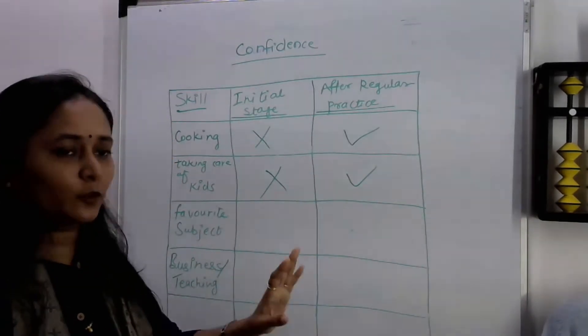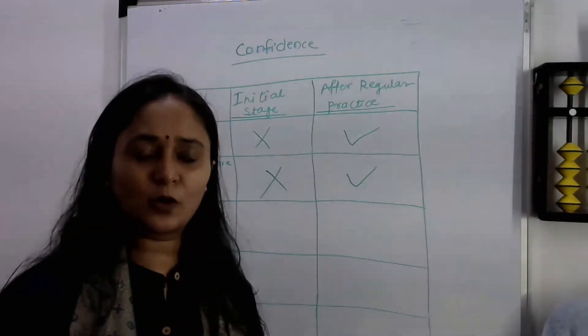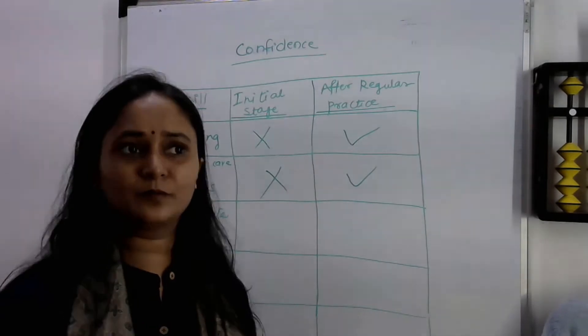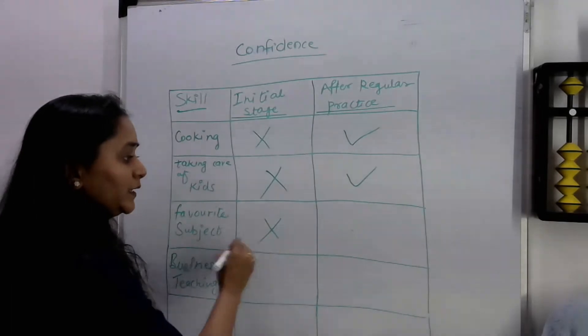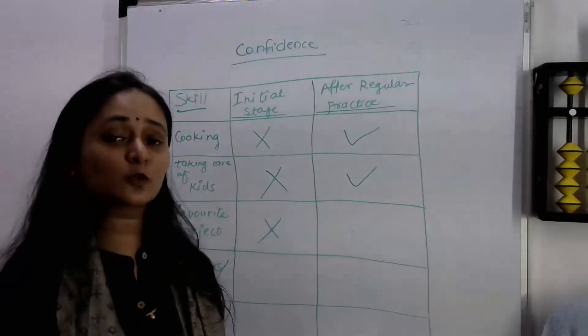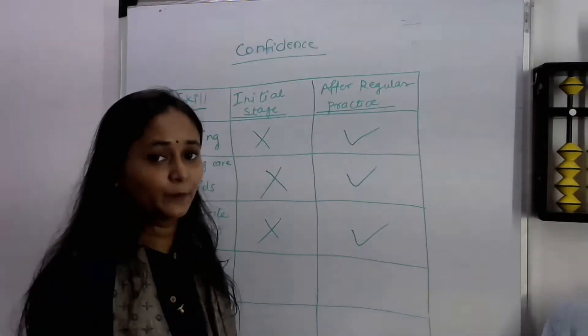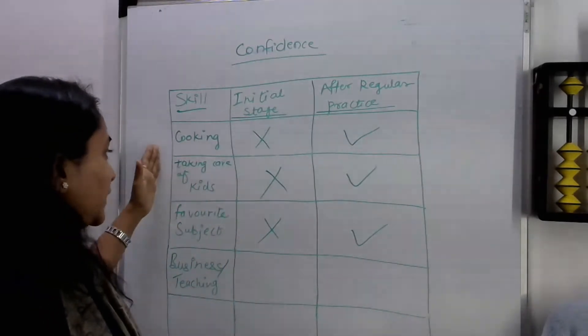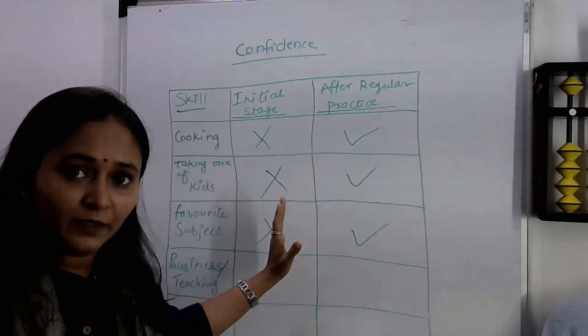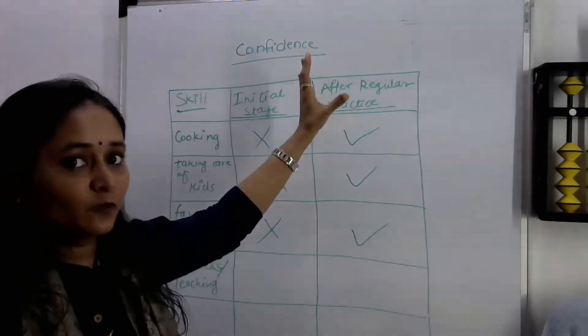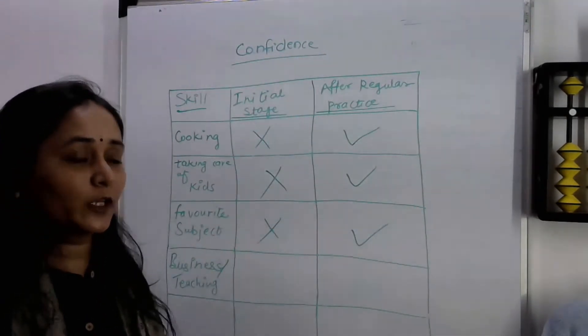Let us think about learning a new subject or new activity—dancing, drawing, maybe cycling, or any activity or subject. Initially you were not confident at all, but slowly and gradually you built that confidence because you practiced that regularly. If you can find a pattern: cooking, taking care of kids, learning new subject or activity—in the initial stage you were not confident enough. You took help of someone, maybe your mother or mother-in-law or a trainer or teacher, and after consistency, after regular practice, you could build that confidence.